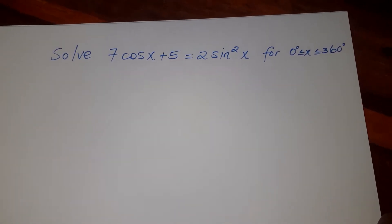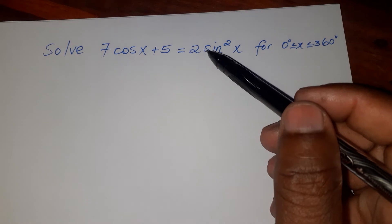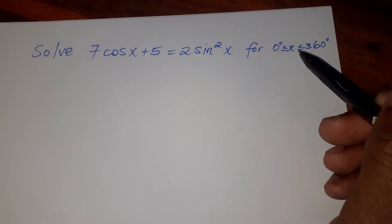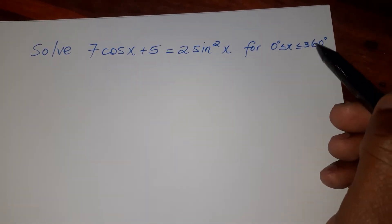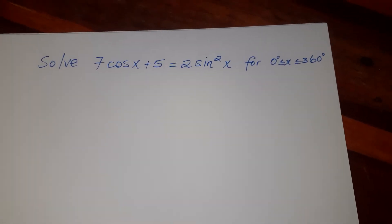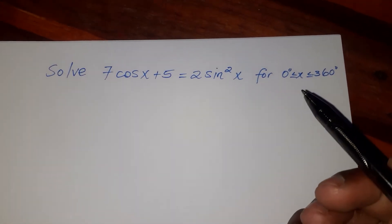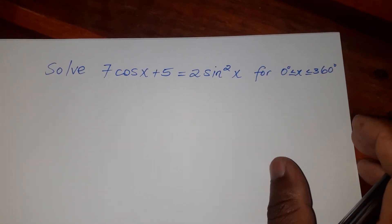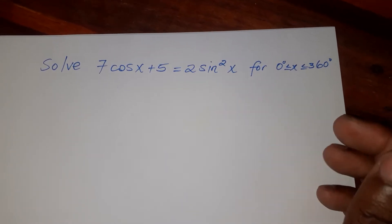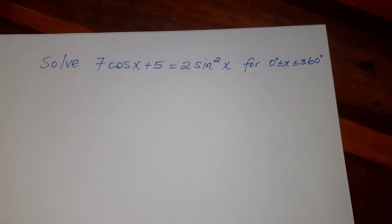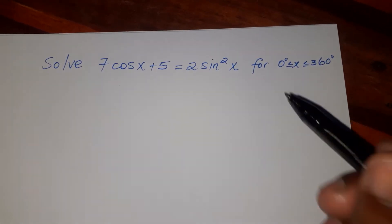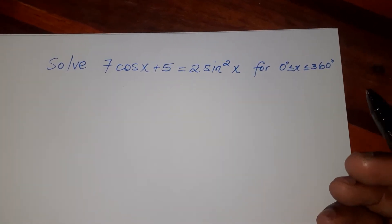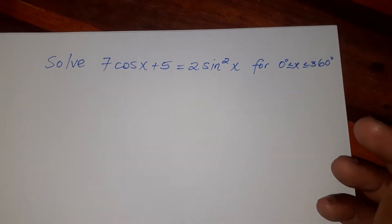In this video we want to solve this equation to get the value of X, such that X should be between 0 degrees and 360 degrees. This equation involves trigonometric functions, but we need to somehow convert it into a quadratic equation that we can solve either by factorization or using other methods.